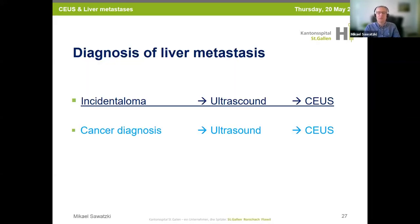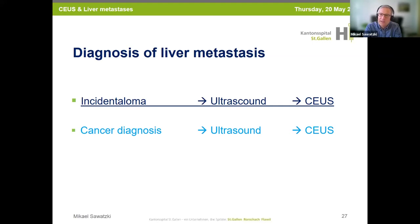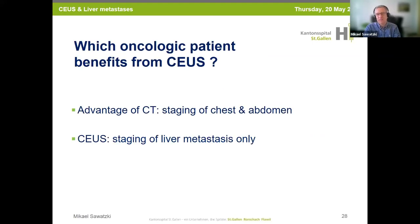In clinical routine we have two possibilities: we see an incidentaloma on grayscale ultrasound and can immediately perform CEUS with very accurate differentiation of malignant and benign. In the other case, oncologic patients are screened for liver metastasis. But most oncologic patients will not be sent to our unit — they will have directly CT staging. The advantage of CT is staging of chest and abdomen; CEUS would only stage the liver. So which oncologic patient benefits from CEUS?